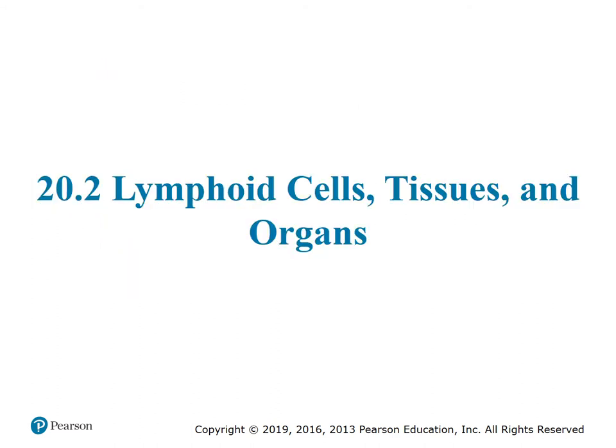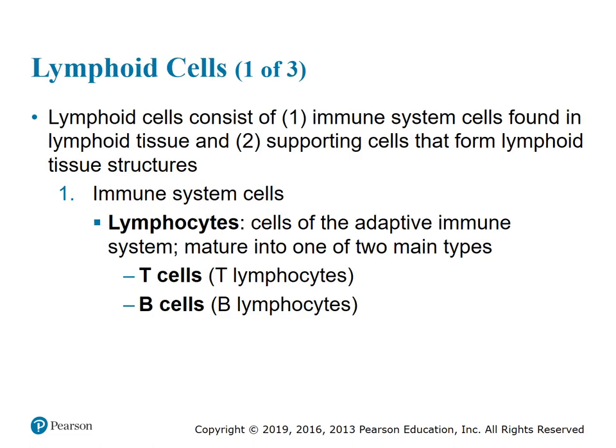Section 20.2: Lymphoid cells, tissues, and organs. Lymphoid cells consist of immune system cells found in lymphoid tissue and supporting cells that form lymphoid tissue structures. Lymphocytes are cells of the adaptive immune system. They mature into one of two main types: T cells, also known as T lymphocytes, and B cells, also known as B lymphocytes.